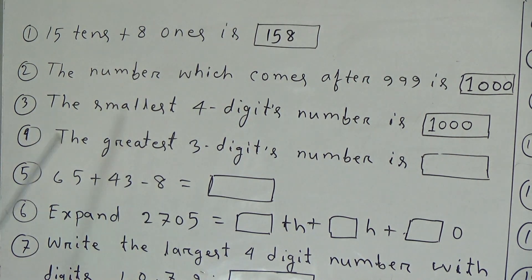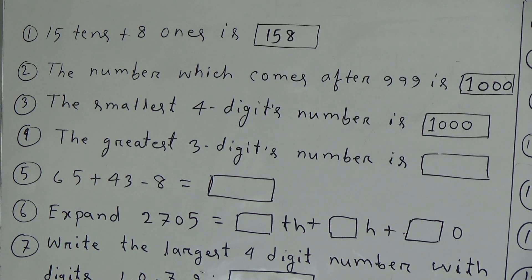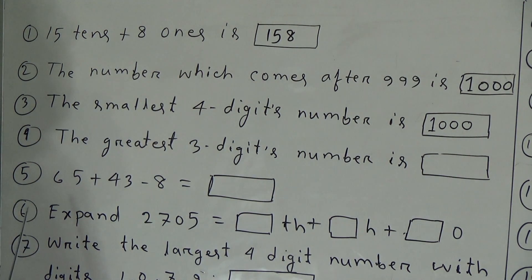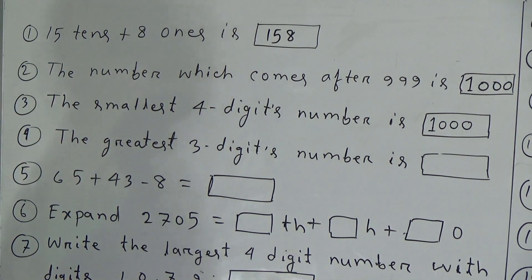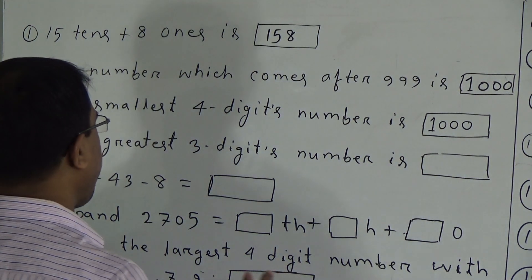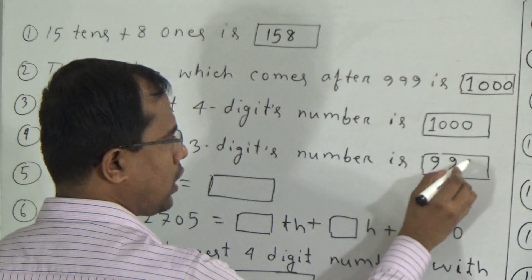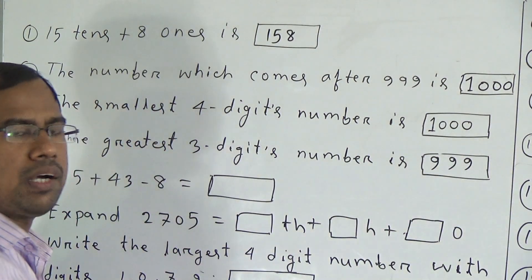Fourth question: the greatest 3-digit number. In every place, we have to put the greatest digit. We know that the greatest digit is 9. So in the 100s place, in the 10s place, and in the 1s place, we put 9, 9, and 9. That means the greatest 3-digit number is 999.